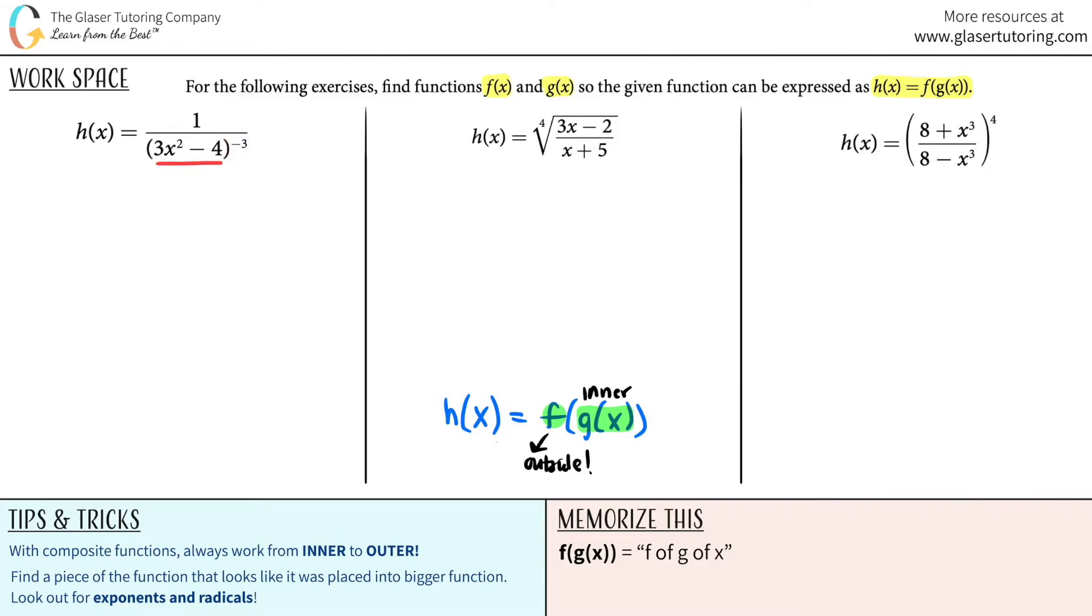So this whole thing is inside. It's trapped inside. Use that key notation. Think, what is inside something else? That is going to give you the answer for the inner function. And in this case, it's the g of x function. So literally write it as that. The g of x function was whatever you thought was inside something else. So the g of x function was 3x squared minus 4.